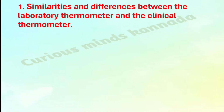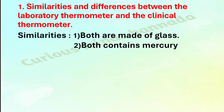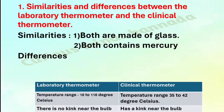First question: similarities and differences between the laboratory thermometer and the clinical thermometer. Answer - first we will see the similarities: both are made of glass, and both contain mercury.